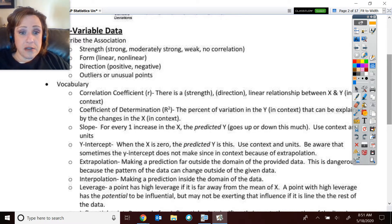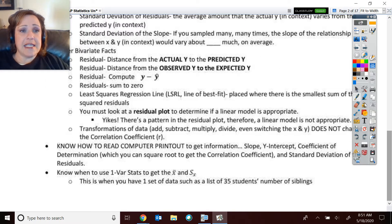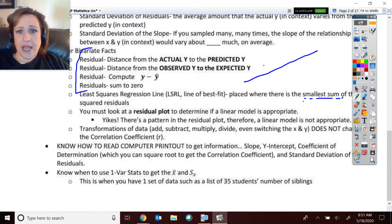Keep in mind extrapolation, making that prediction far outside interpolation, what that is. And then you've really got to know this residual material. That that least squares regression line is the smallest sum of those squared residuals. That's where we had a residual and we would make a square from it. And where those squares added up to be the smallest. Don't forget, you need to look at the residual plot to see if the data is linear or not.